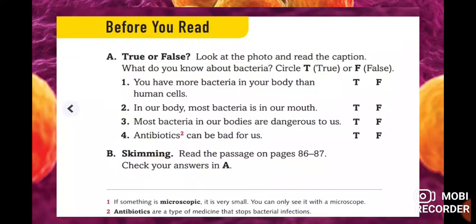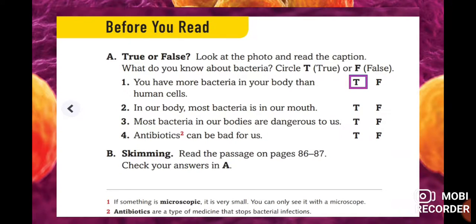First, we develop the exercise 'Before You Read' — we circle true or false, depending on our opinion. Number one: you have more bacteria in your body than human cells. This is true information.